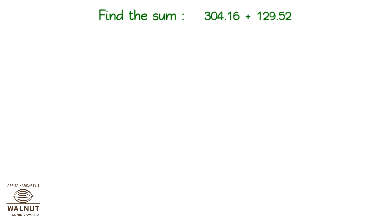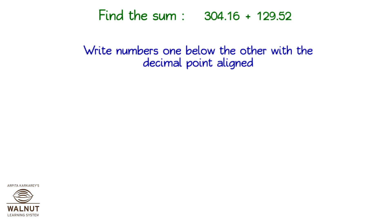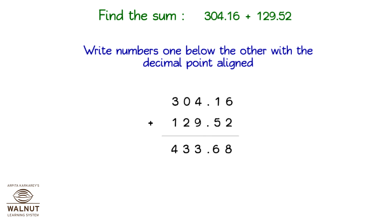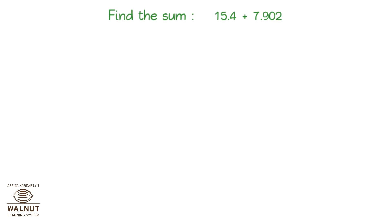Find the sum 304.16 plus 129.52. Write numbers one below the other with the decimal point aligned. 304.16 plus 129.52 is equal to 433.68.